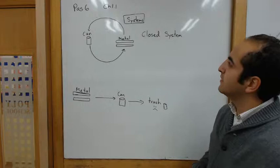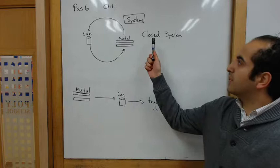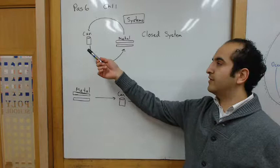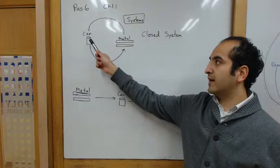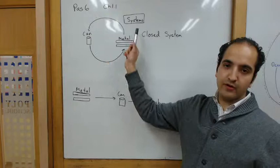So this is about systems. The first part might be a little bit confusing. It talks about a closed system. A closed system, you can take, for example, an aluminum can. An aluminum can comes from metal, so from metal to an aluminum can, then if we recycle this aluminum can, it can become metal again. That is a closed system.